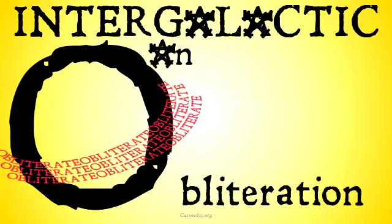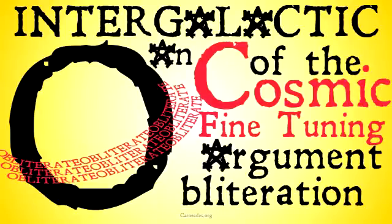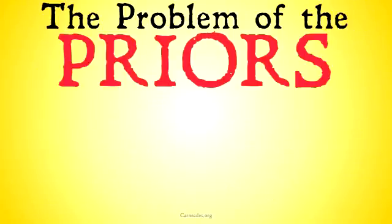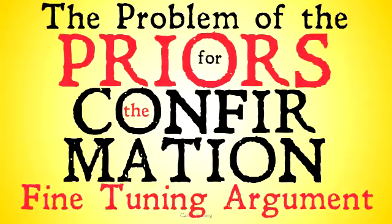Welcome back to Carnades.org. Today we're going to be continuing with our series, an intergalactic obliteration of the cosmic fine-tuning argument. In this video we're going to be looking at the problem of the priors for the confirmation fine-tuning argument. The confirmation fine-tuning argument is a kind of softer version of the cosmic fine-tuning argument that we checked out in the last video. If you're unfamiliar with that argument or the cosmic fine-tuning argument in general, you should check those out now.